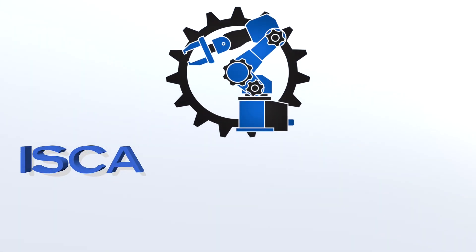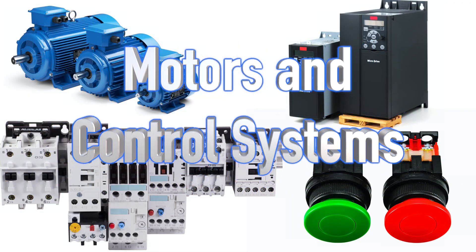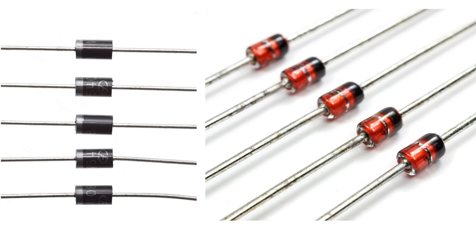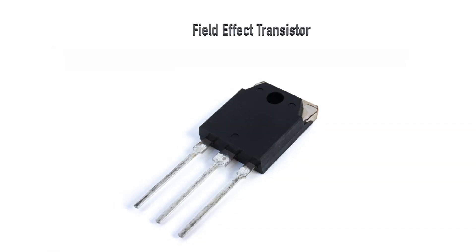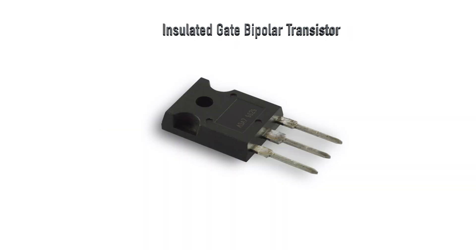Welcome back to another video brought to you by ISCA Engineering. We are continuing our series in motors and control systems. In the last video, we looked at semiconductor diodes. In this video, we will be looking at transistors, specifically the Bipolar Junction Transistor and Field Effect Transistor. In the next video, we will continue with the Metal Oxide Semiconductor Field Effect Transistor and Insulated Gate Bipolar Transistor.